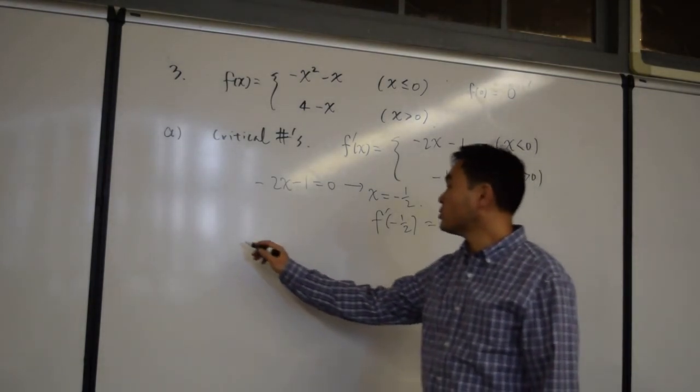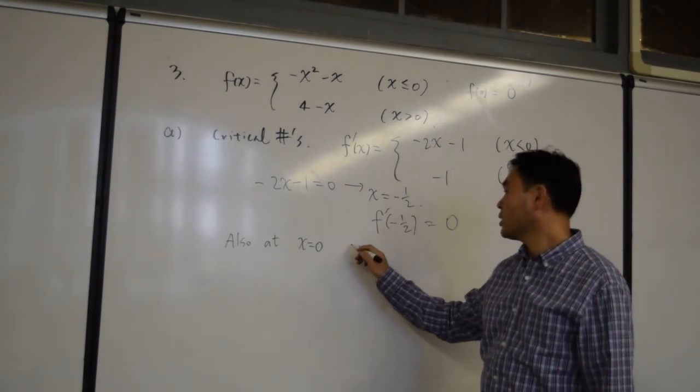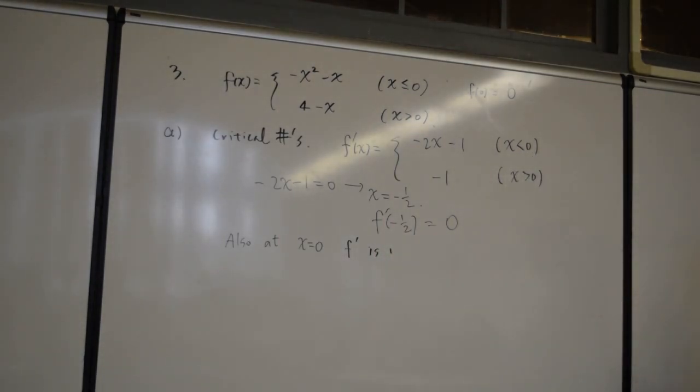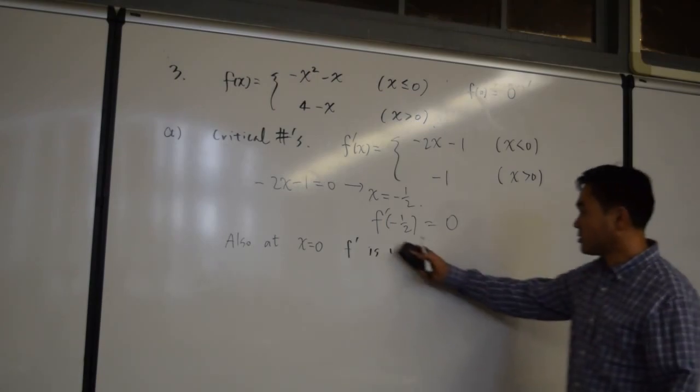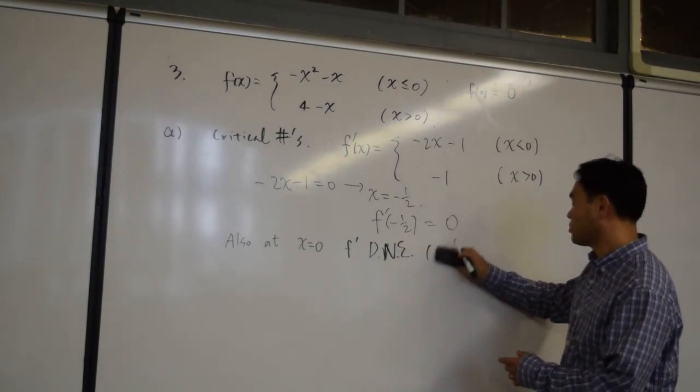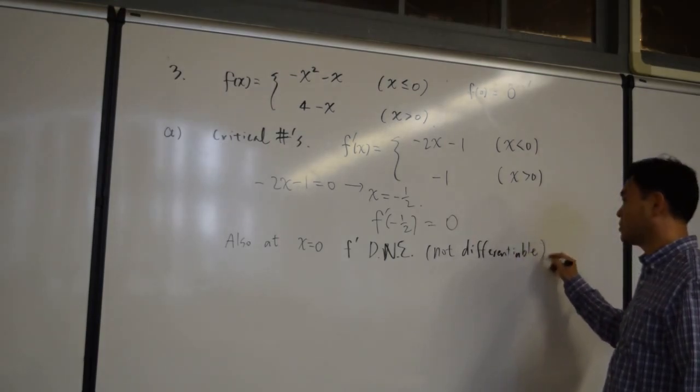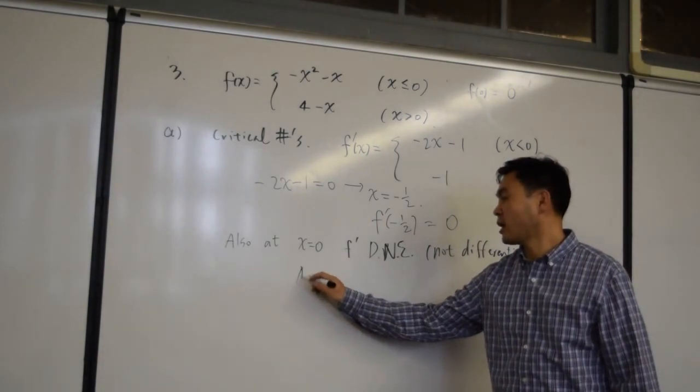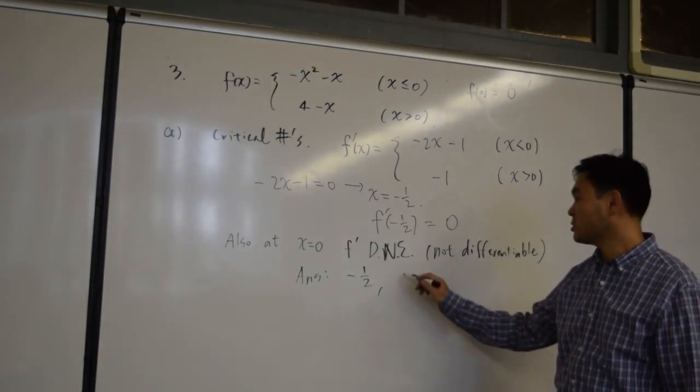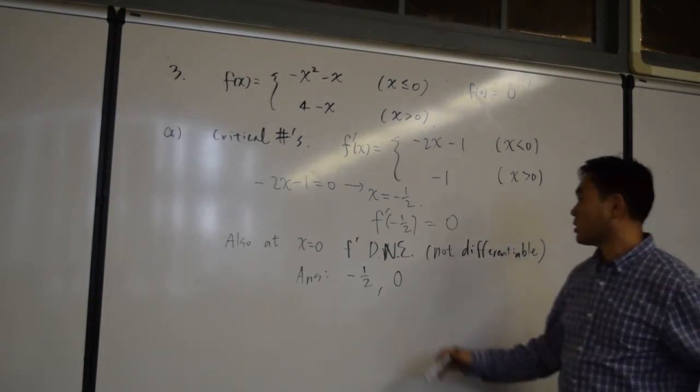But also, at x equal to zero, f prime is undefined. Or I guess the better way to say it is f prime does not exist. It is not differentiable. So these are the critical numbers. At negative one-half, it's a critical number because f prime is equal to zero. At zero, it's a critical number because f prime does not exist.